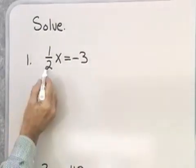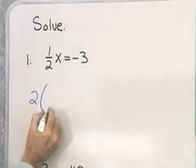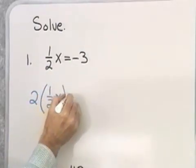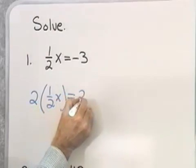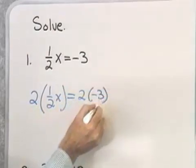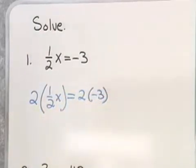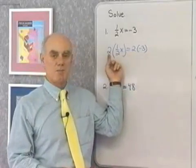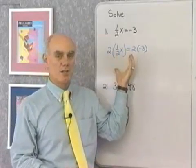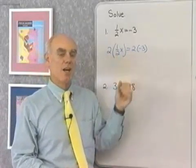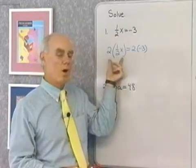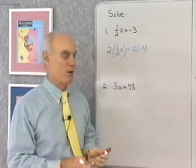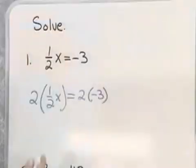The reciprocal of 1/2 is 2. So 2 times 1/2 x on the left side, and then 2 times negative 3 on the right side. That's the multiplication property — I'm free to multiply both sides by 2 any time I want and it won't change the solution set. What it will do is give me 1x on the left side, and so I will have solved this equation.